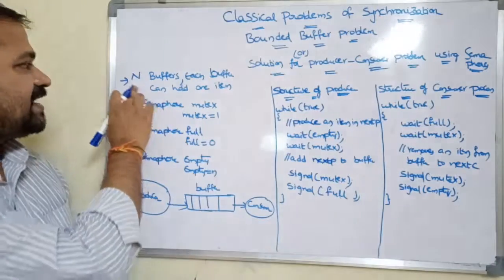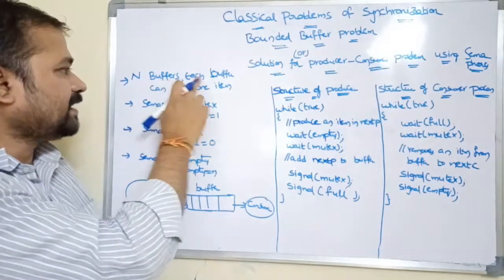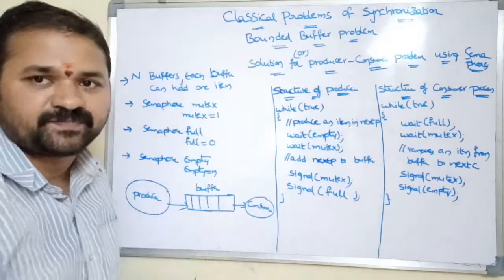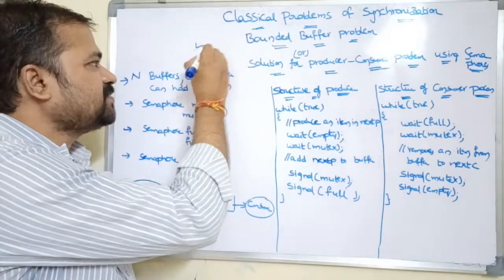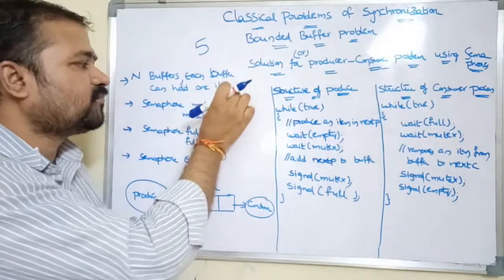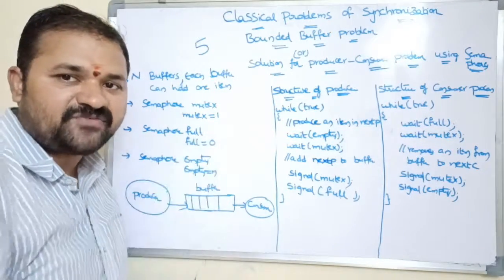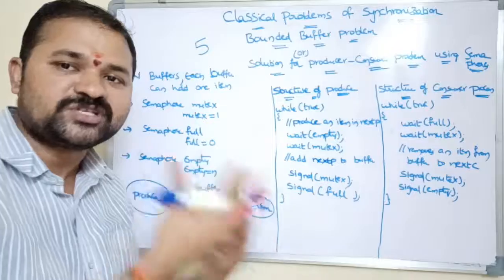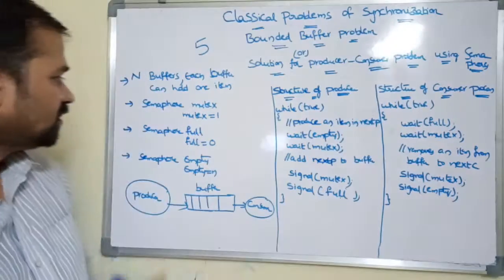Here we can have N buffers, where each buffer can hold one item. For example, if we have five buffers, each buffer can hold one item, so with five buffers we can store five items.